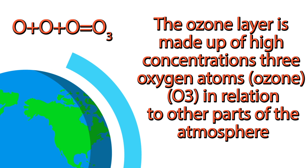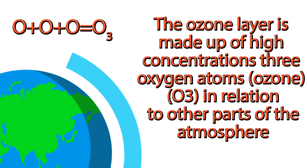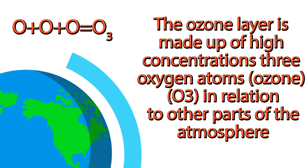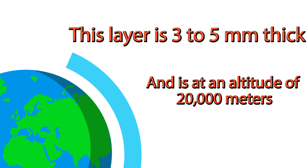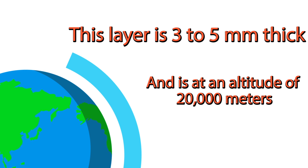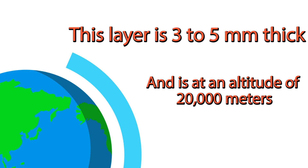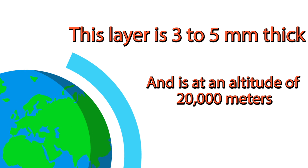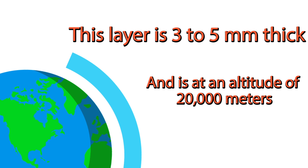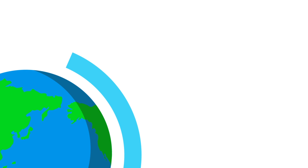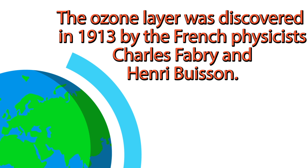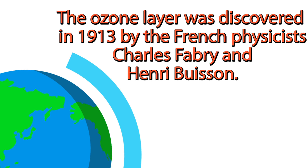The ozone layer is made up of high concentrations of 3 oxygen atoms — ozone. This layer is 3 to 5 millimeters thick and is at an altitude of 20,000 meters. The ozone layer was discovered in 1913 by French physicists Charles Fabry and Henri Buisson.